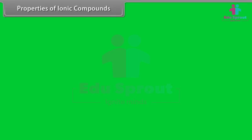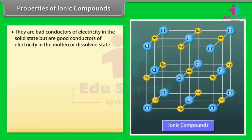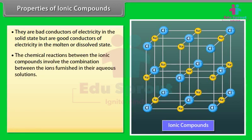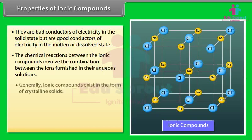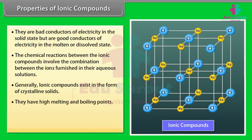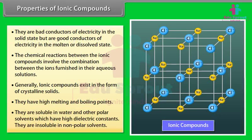The common properties of ionic compounds are: they are bad conductors of electricity in solid state but good conductors in molten or dissolved state; reactions between ionic compounds involve combination of ions in aqueous solutions, called ionic reactions; ionic compounds generally exist as crystalline solids with high melting and boiling points due to strong electrostatic forces between oppositely charged ions; they are soluble in water and other polar solvents with high dielectric constants, and insoluble in non-polar solvents.